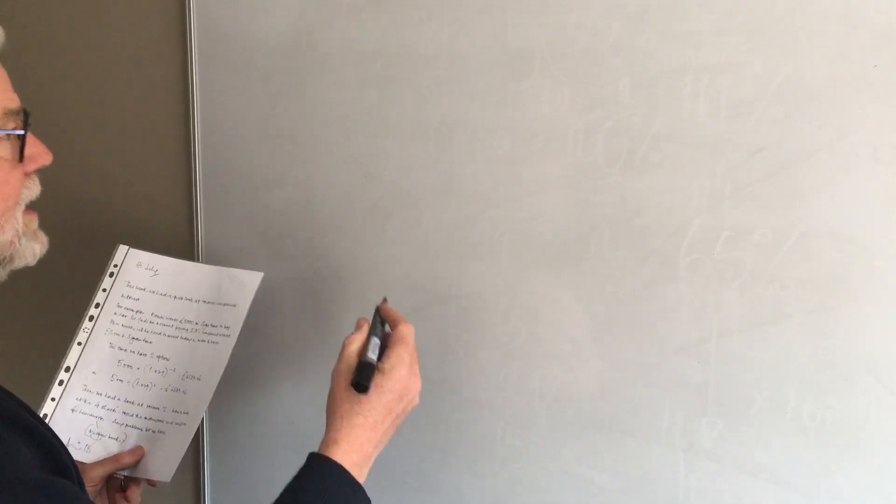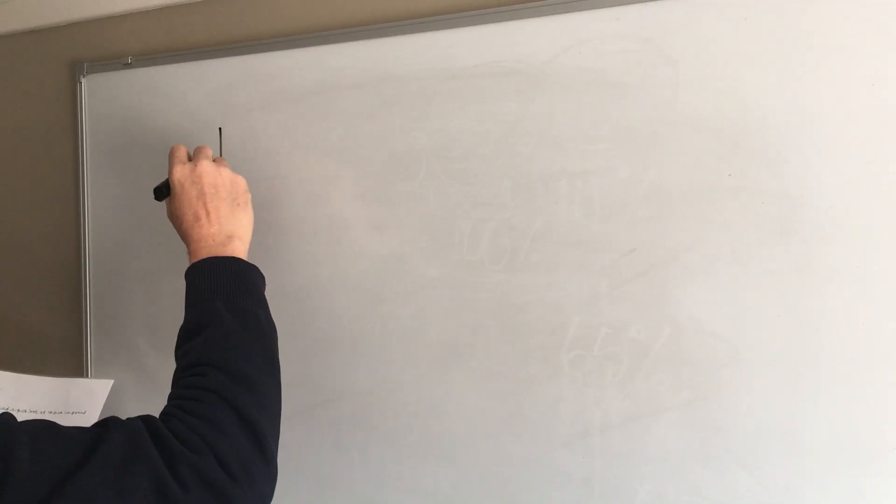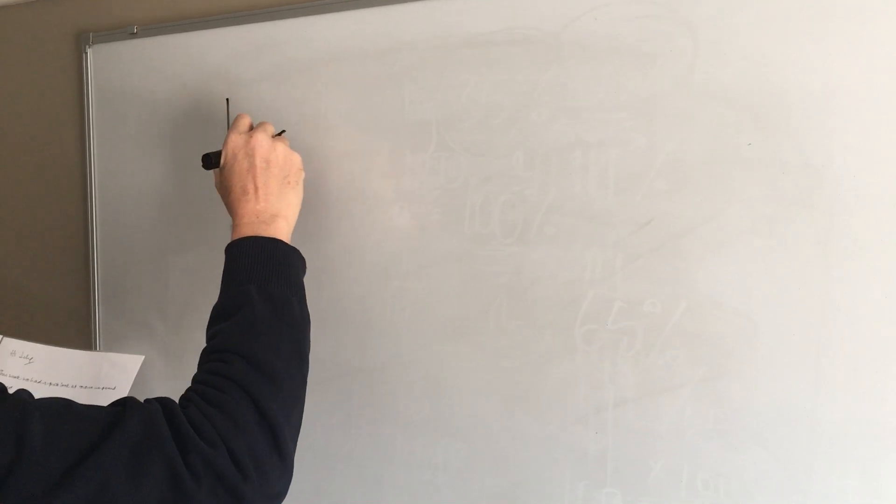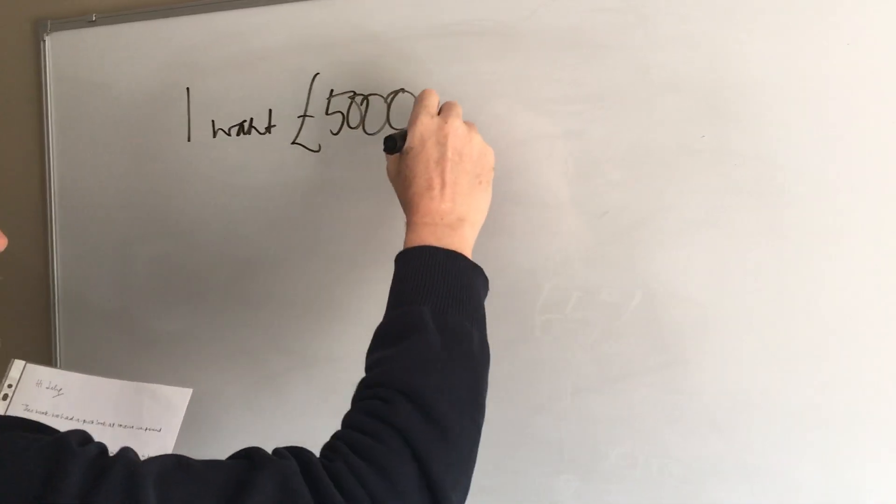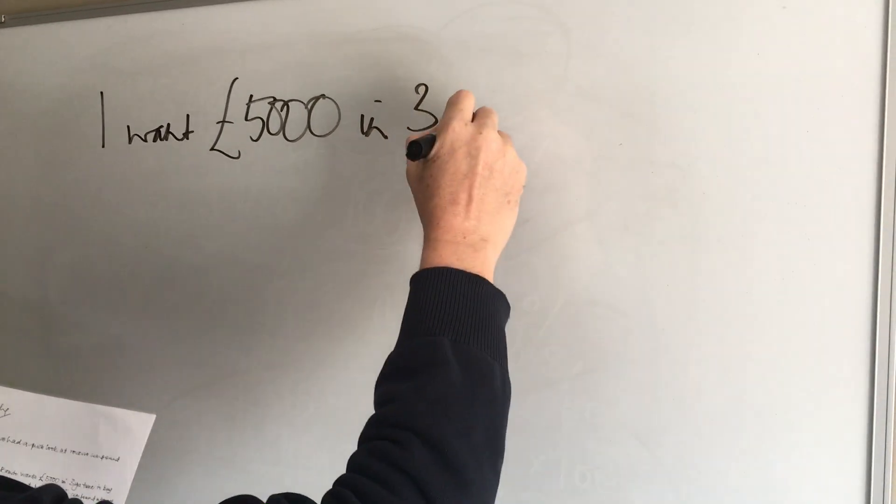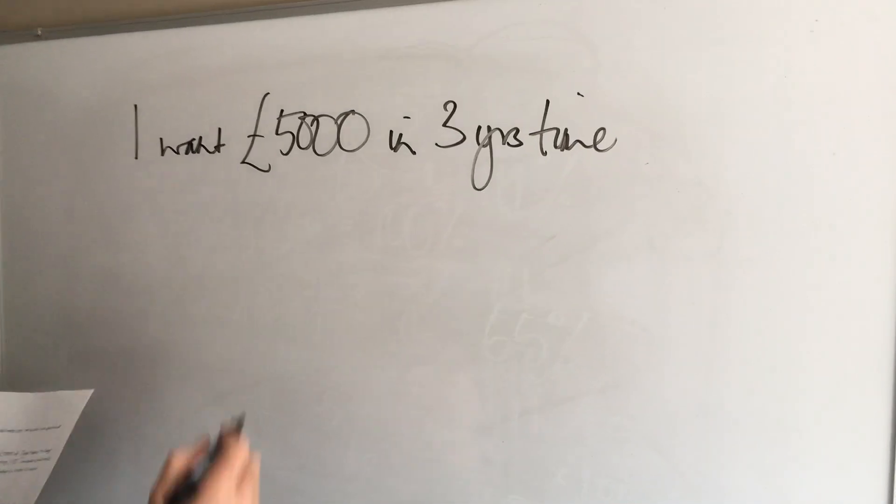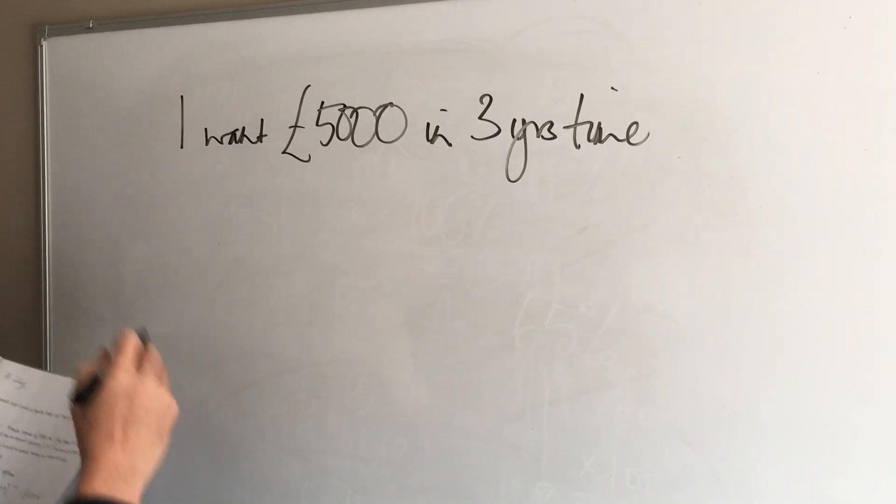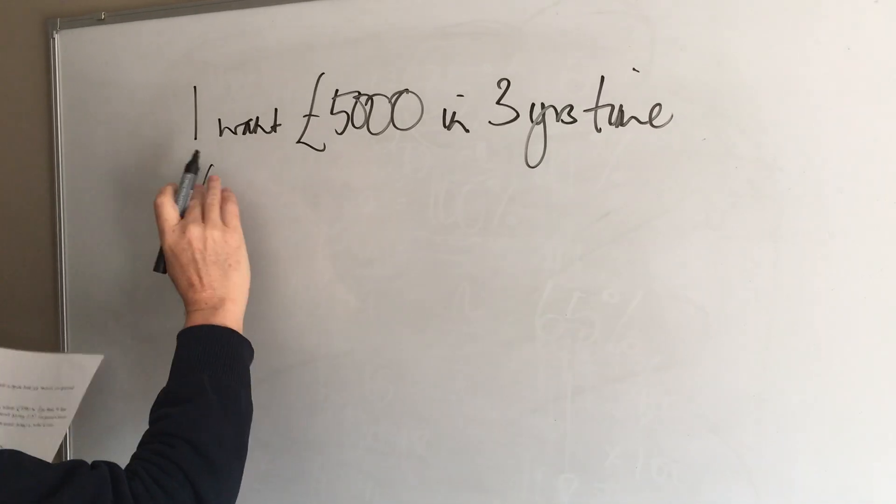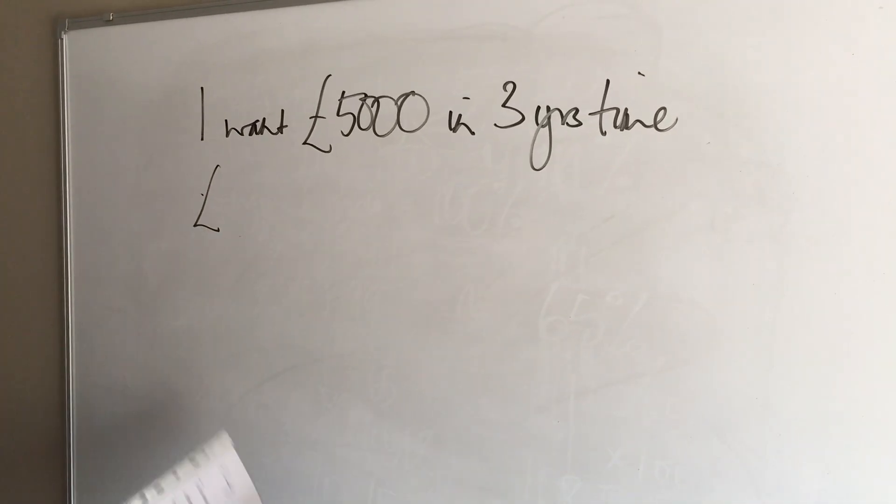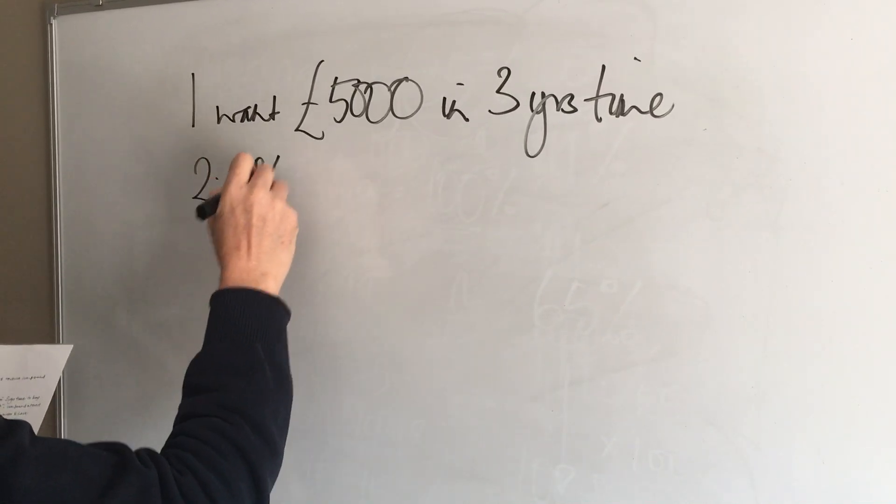So let me give you an example. Let's say I need to save, I want to have £5,000 in three years time for whatever reason, I want to buy something that's going to cost me that. Now I found a savings account that's going to pay me 2.9% interest per annum.